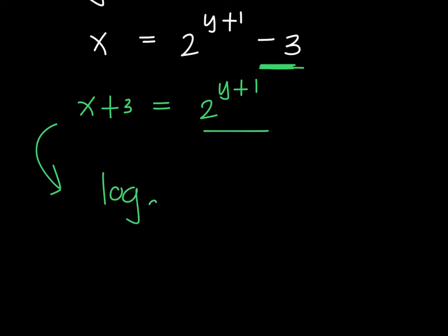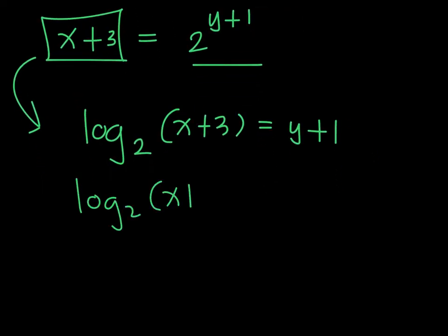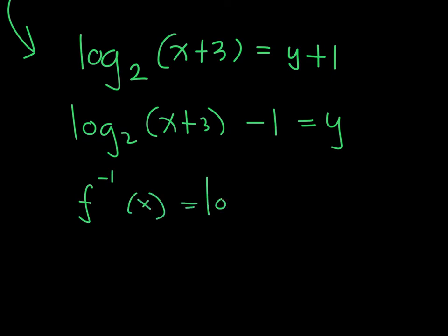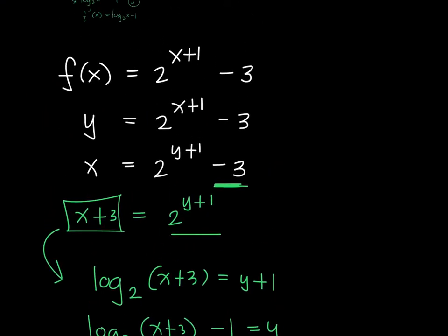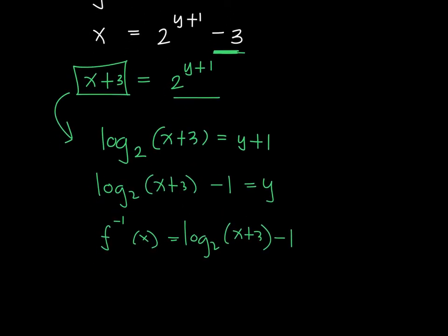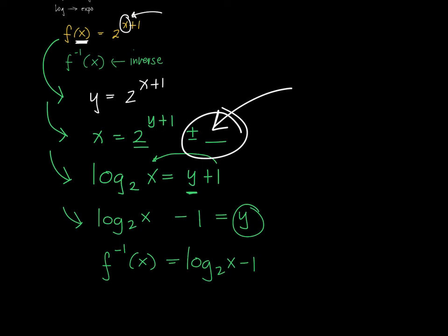Once you've isolated the exponential expression, convert to logarithmic form: log base 2 of (x plus 3) equals y plus 1. Then subtract 1 to get y, giving the inverse: y = log base 2 of (x + 3) minus 1. The key difference here is that if a number is being added or subtracted, you must isolate the exponential expression before converting to logarithmic form.